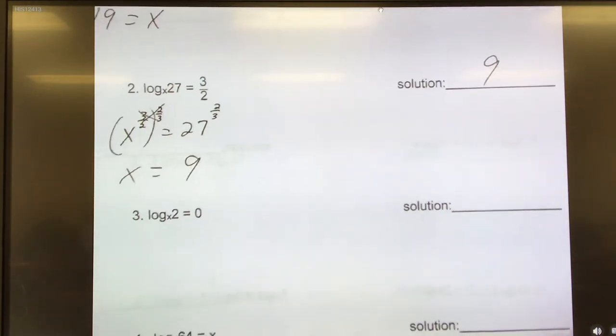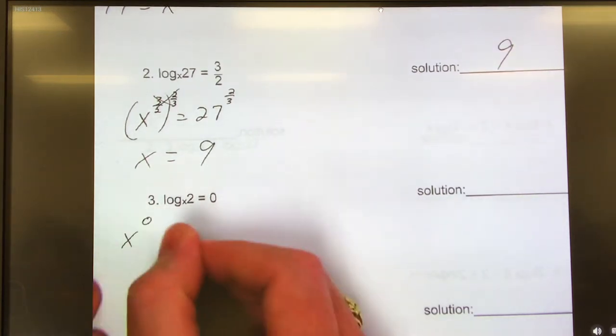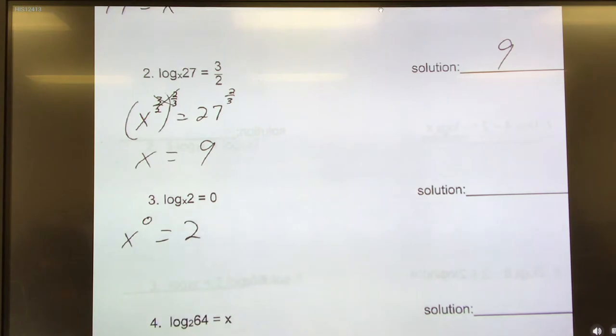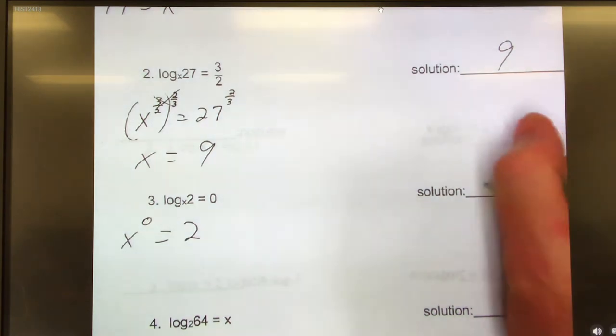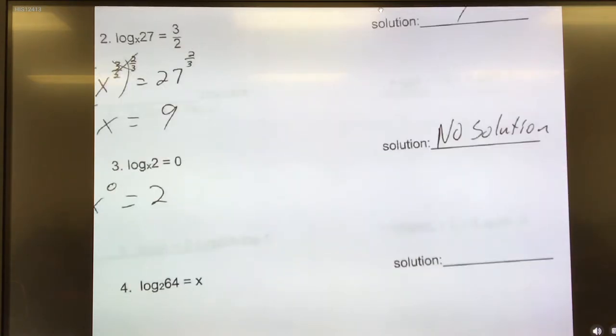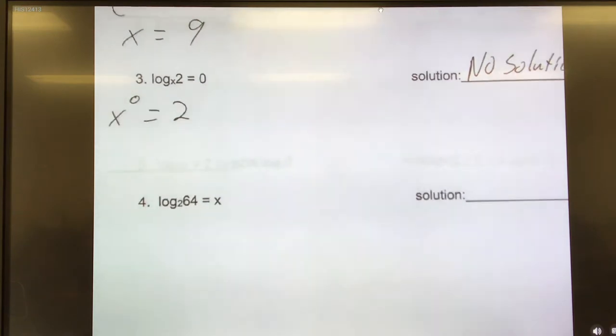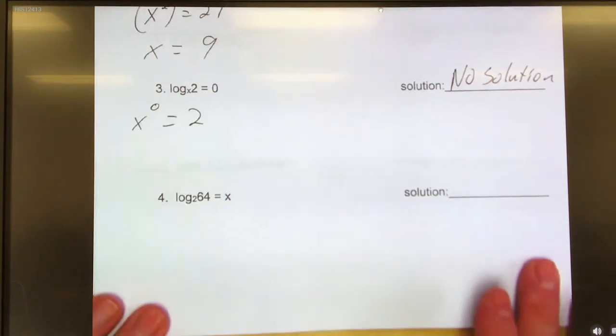Number 3. Base is x to the 0 power equals 2. We have a problem. What is anything to the 0 power? 1. So it cannot equal 2. So this one is no solution.